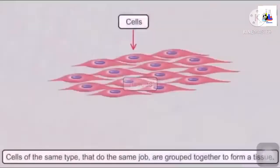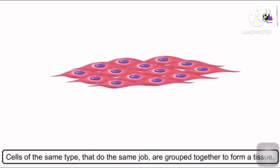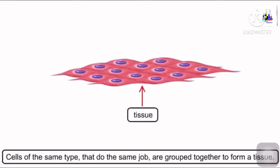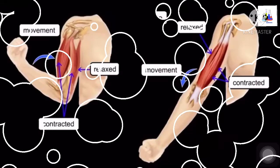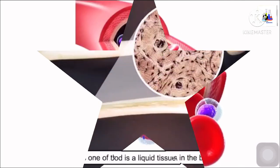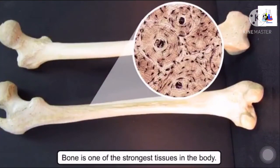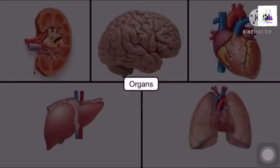Next is tissue. Cells of the same type that do the same job are grouped together to form a tissue. For example, muscle cells contract and relax — that is muscle tissue for movement. Blood is a liquid tissue. Bone is the strongest tissue in our body, and enamel is the hardest tissue.